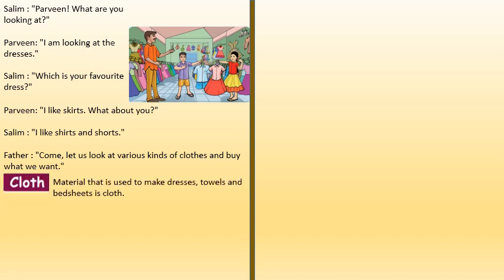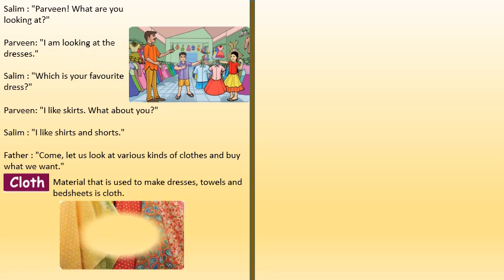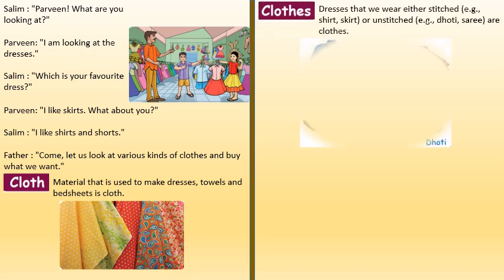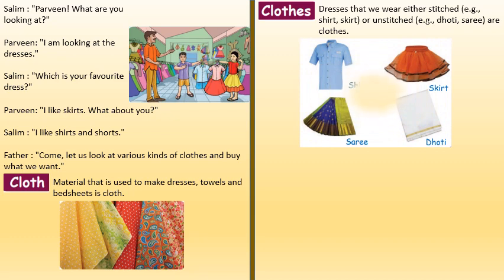Clothes. What is clothes? Material that is used to make dresses, towels and bedsheets is called clothes. Clothes are like dresses that we wear, either stitched like a shirt or skirt, or unstitched like dothi and saree.